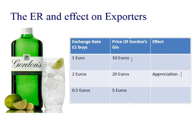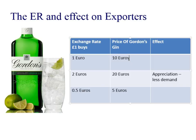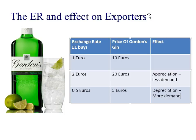Gordon's is an export, and you can see what French, Spanish, or German consumers would think if Gordon's put the price up to 20 euros — they'd get less demand. Or they could keep it at 10 euros, but when they convert back at £1:2€ they'd only get £5. So either they put the price up and suffer less demand, or they keep the price the same but revenue value decreases. However, if £1 buys only 0.5 euros — that's depreciation of the pound — the price gets cheaper for foreign consumers, yet when converting back you're still making £10. Conclusion: exporters like depreciation, because it makes their product appear cheaper when exporting, so there's more demand.